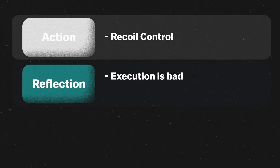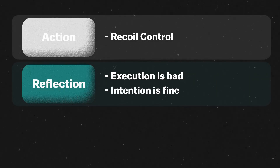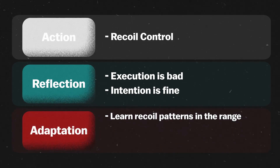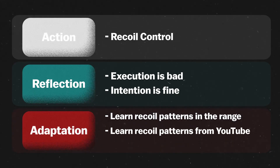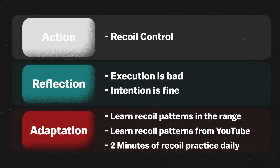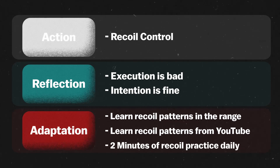Issue 2: recoil control. We determine that our execution of recoil control is lacking for certain weapons. We educate ourselves on the different recoil patterns by hopping into the range or looking up some YouTube guides. We then dedicate a couple minutes of isolated practice each day controlling our recoil, and within a week or two, are miles ahead of where we started.